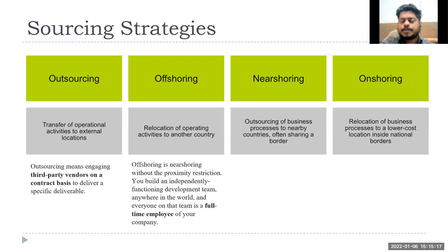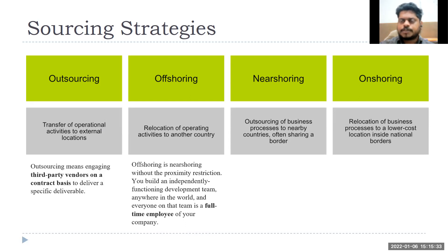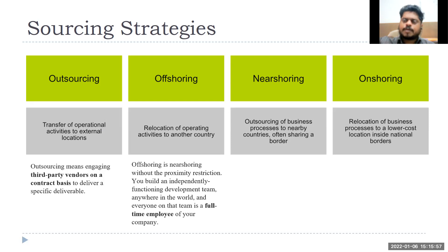Offshoring is when you build your own plant or office in another country. Most MNCs — GE, Google, Apple, Accenture, Deloitte — are US-based companies that have offices in India, Mexico, and other locations. That is offshoring because they have their own offices. If you work in Deloitte India, you are still an employee of that company. Accenture or IBM might then outsource some part of work to TCS or Infosys — that is outsourcing.